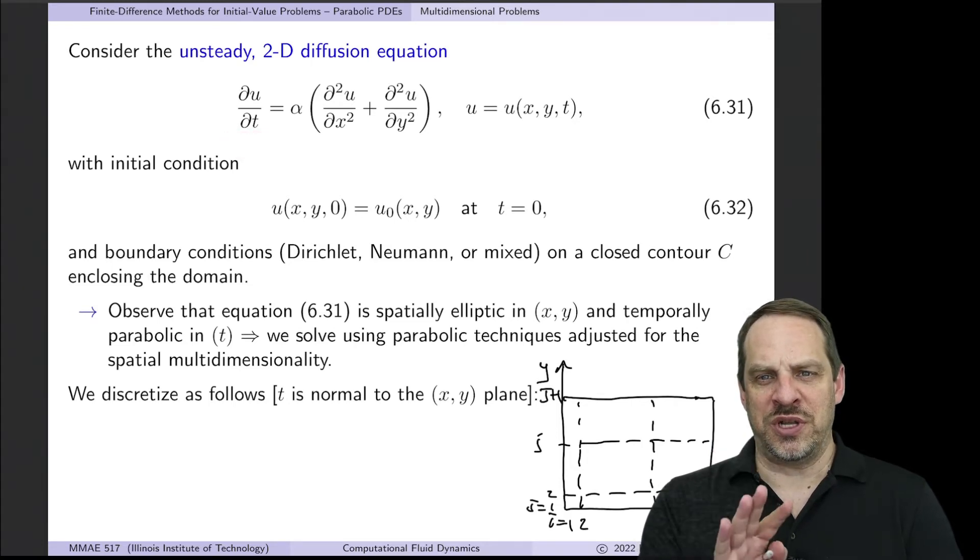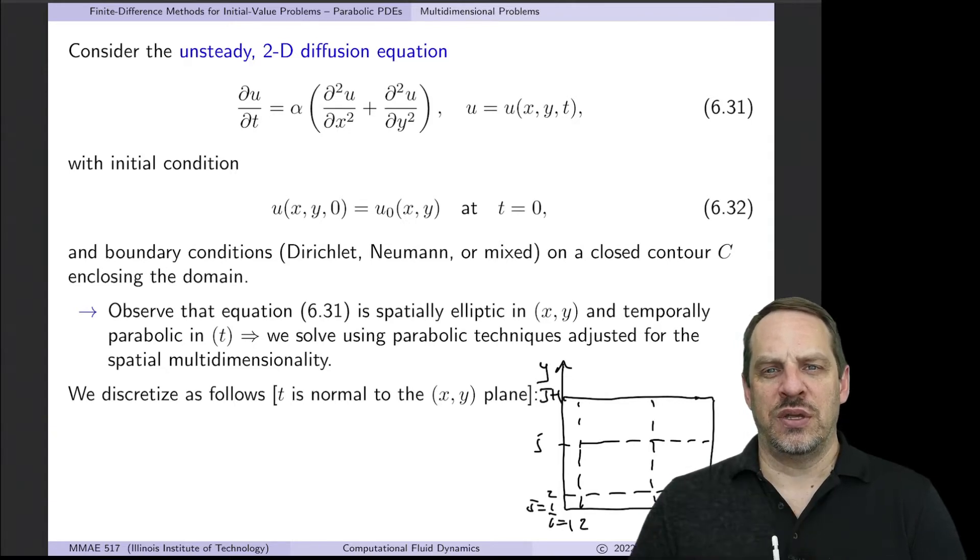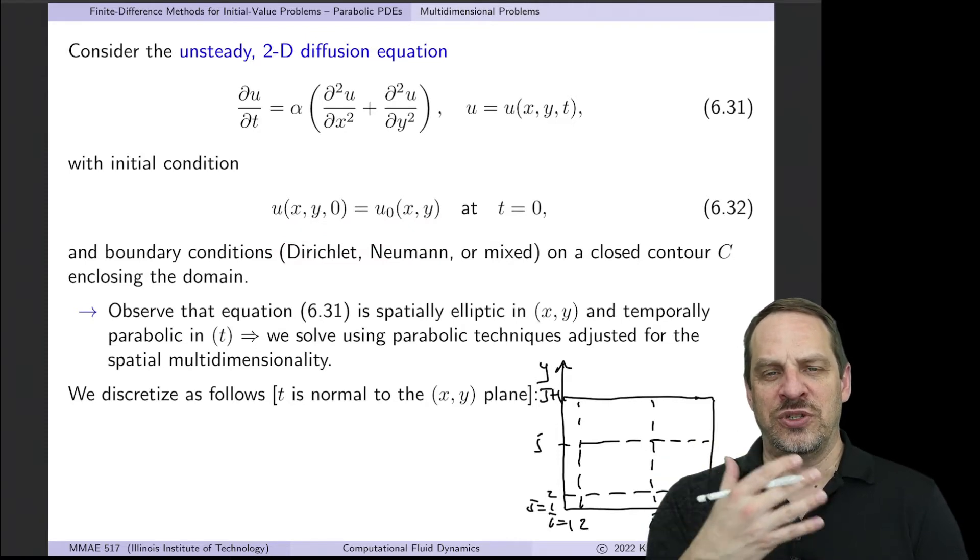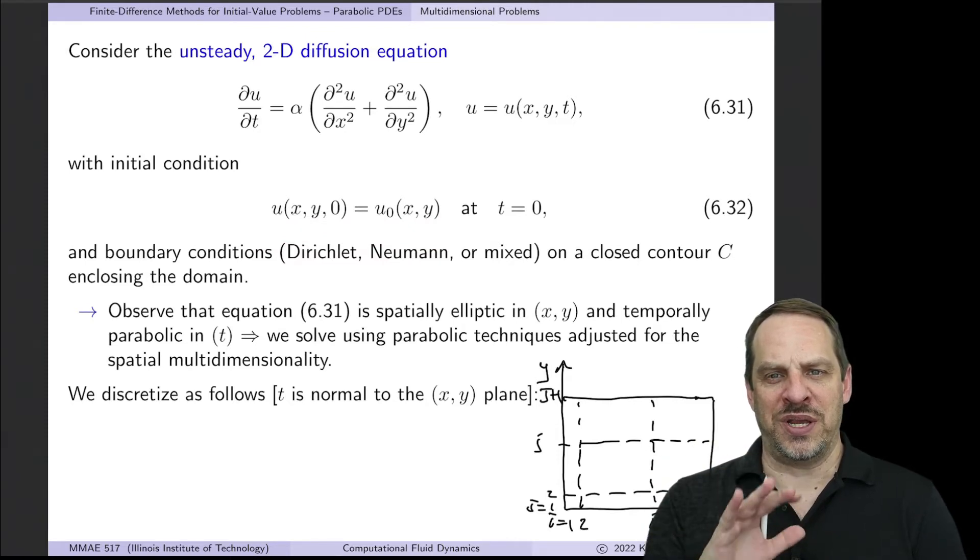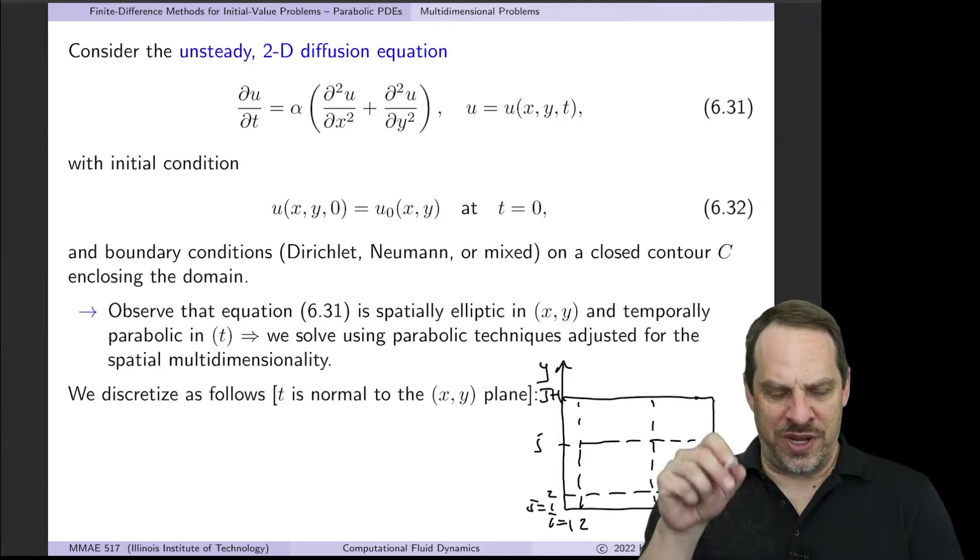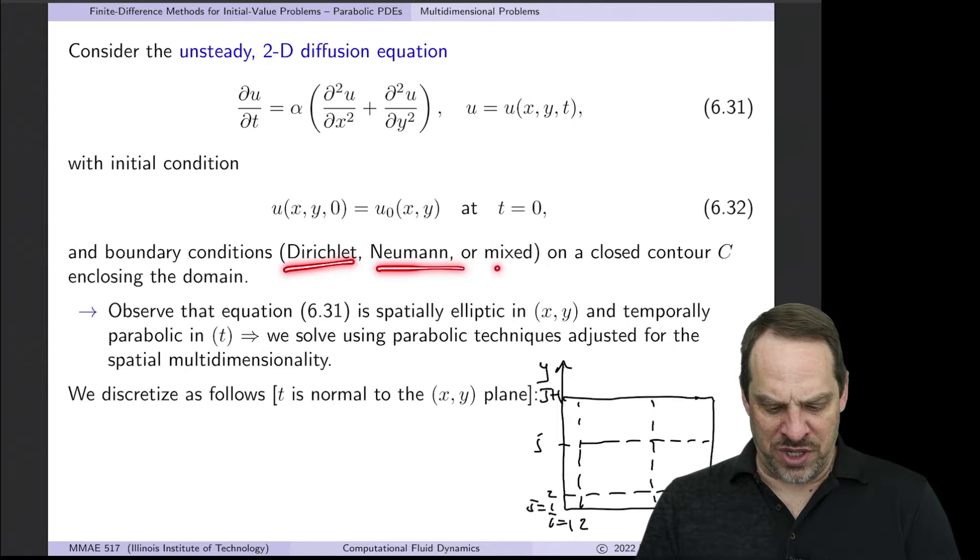However, you're going to see some similarities between what we'll do here in terms of handling the two-dimensionality as compared to what we did with elliptic methods for multidimensional problems. As always, we'll have to have an initial condition, so at t equals zero we'll have some distribution of the dependent variable u as a function now of x and y throughout the entire domain at t equals zero. The boundary conditions then all the way around the boundary could be Dirichlet, Neumann, or mixed as we discussed in the previous chapter.